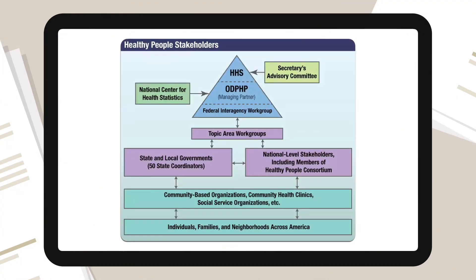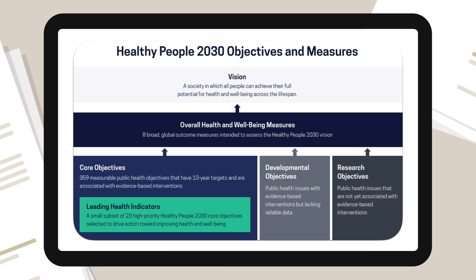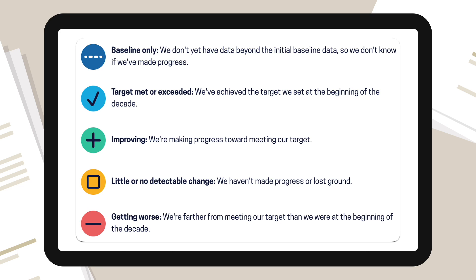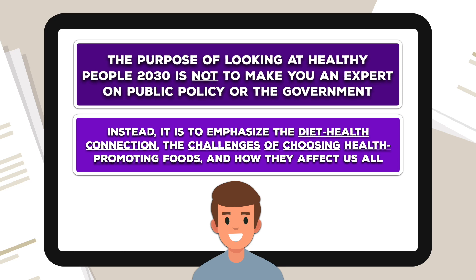Healthy People starts with gathering information about health-related challenges from various stakeholders — from government agencies to community-based organizations and individuals, families, and neighborhoods across America. After that, they identify and sort the objectives based on the number and quality of evidence-based interventions we have for each one, and attempt to make them the focus of policy, a program, or research. Finally, as the decade goes on, each objective is evaluated for progress, and all of that feedback is used to shape the creation of the next initiative. The purpose of looking at Healthy People 2030 is not to make you an expert on public policy or the government. Instead, it's to emphasize the diet-health connection, the challenges of choosing health-promoting foods, and how they affect us all.